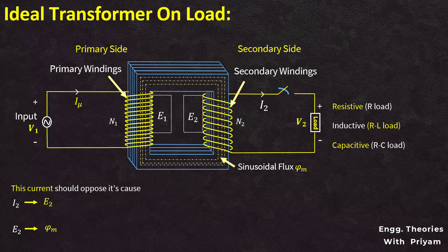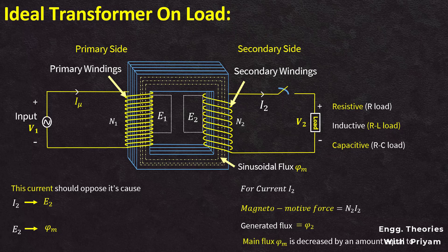The current flowing in the secondary winding through the load is equal to I2. If we take the direction of this current I2 from left to right, this current induces a magnetomotive force N2I2. This magnetomotive force N2I2 in the secondary winding generates a flux phi 2. The direction of the generated flux phi 2, which is due to the current through the load I2, can be determined by the thumb rule, and this generated flux phi 2 will be exactly opposite to the main flux phi m flowing in the core. So, the main flux phi m is decreased by an amount equal to phi 2, which is generated due to the magnetomotive force N2I2.